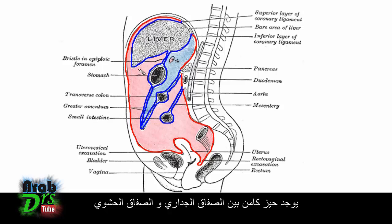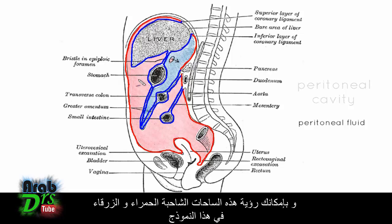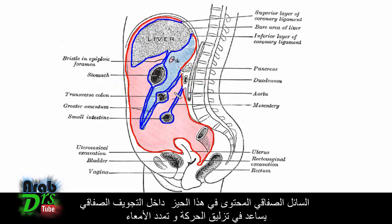There's a potential space between the parietal peritoneum and the visceral peritoneum, and this is called the peritoneal cavity. This contains peritoneal fluid. You can see in this red and blue shading in the diagram — this is the peritoneal cavity, the potential space between the visceral peritoneum and the parietal peritoneum. The peritoneal fluid contained in this space helps to lubricate the movement and expansion of the gut.